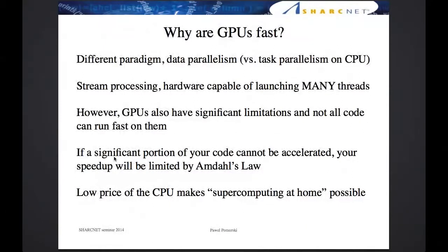Why are GPUs fast? They have a different paradigm than CPUs — they rely on data parallelism versus task parallelism on the CPU. The GPU is ideally tailored for few tasks, but those few tasks operate on many different pieces of data. It's stream processing hardware capable of launching millions of threads. Due to this different paradigm, there are significant limitations and not all code can run fast. The typical approach is to take a certain part of your code and accelerate it on the GPU. GPUs are also fairly cheap, so you can buy one and experiment at home.